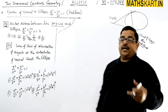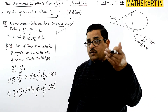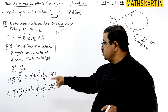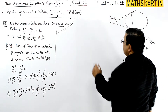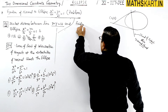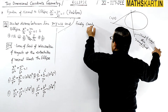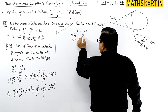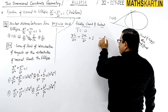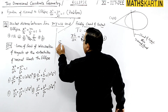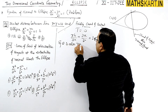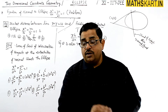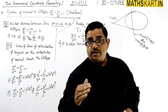For an outside point (h, k), the chord of contact is given by T = 0: xh/a² + yk/b² = 1. This is equation 1. Since this chord is also a normal chord — meaning it is the normal of the ellipse — we also write the equation of the normal. The equation of normal is: ax·secθ − by·cosecθ = a² − b².